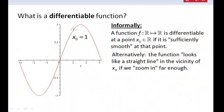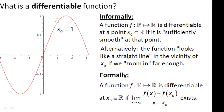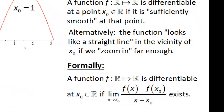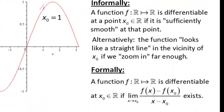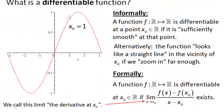These are only informal definitions of differentiability, and it's important to know the proper definition as well. We say a function is differentiable if this limit exists — and you can see that this is actually just the limit of the slope of the tangent line as x approaches x0. And when this limit exists, we call it the derivative of the function at the point x0.